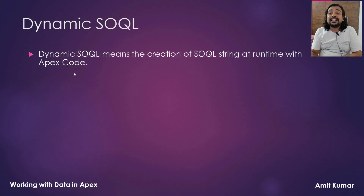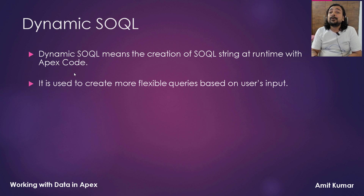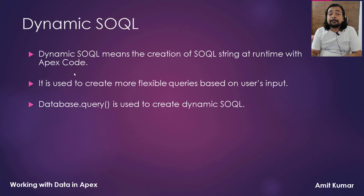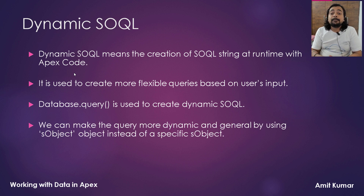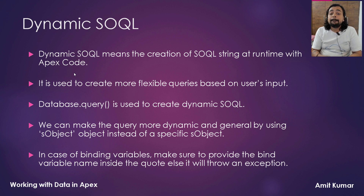Dynamic SOQL means the creation of a SOQL string at runtime with Apex code. It is used to create more flexible queries based on user input. The Database.query method is used to create dynamic SOQL. We are going to use the Database class which provides us a query method, and with the help of that we can create dynamic SOQL. We can make the query more dynamic and general by using the generic SObject instead of a specific SObject. In case of binding variables, make sure to provide the bind variable name inside the quotes, else it will throw an exception.